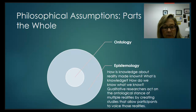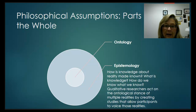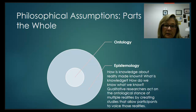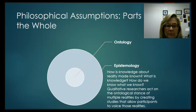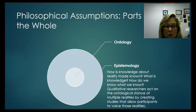The next ring on the circle is epistemology. If ontology is the nature of reality, epistemology is how do we know what we know? How do we know reality? How is reality made known? If qualitative researchers think that the nature of reality involves multiple realities, then epistemology asks: what is the knowledge about those multiple realities? Qualitative researchers act on that ontological stance by creating studies that allow participants to voice those multiple realities — teasing out all the perspectives and all the voices that might not get heard in a stance that recognizes only a single reality.